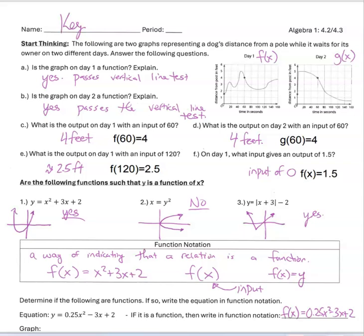Let's focus on the purple writing first. It asks: is the graph on day one a function? The answer is yes, because it passes the vertical line test. Another way to think about this is that an input of a certain number of seconds can't have two different distances — you can't be in two places at one time. On day two, is that a function? Yes. While the first part looks close to vertical, it's not actually vertical. So it does pass the vertical line test and is a function as well.